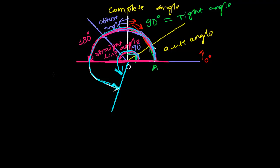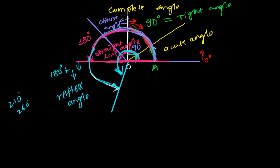This whole angle up to here, if you measure with a protractor, will be more than 180 degrees — maybe 210 or 260, whatever it is. This angle which is greater than 180 degrees is known as a reflex angle. Those angles less than 180 degrees but greater than 90 degrees are obtuse angles, the straight angle is formed at exactly 180 degrees, and going more than 180 degrees gives you a reflex angle.